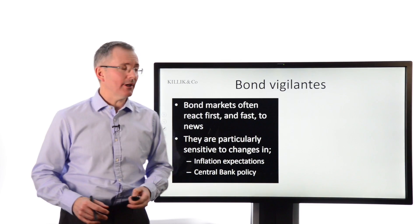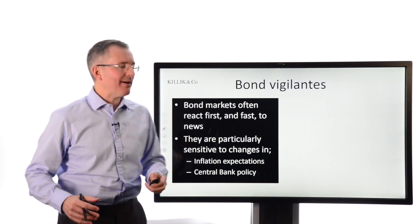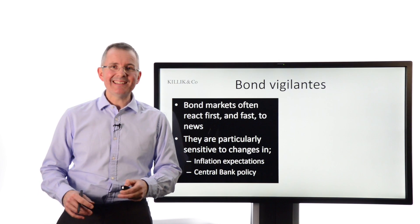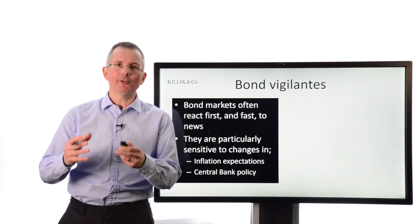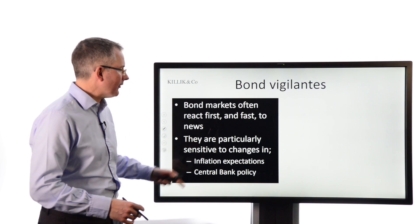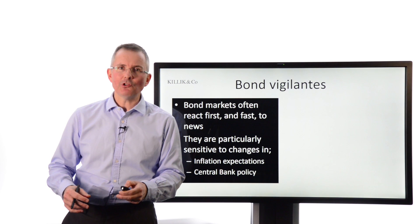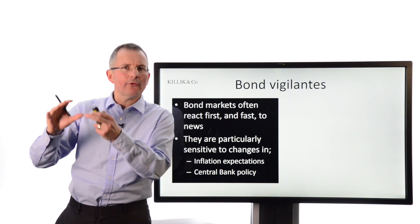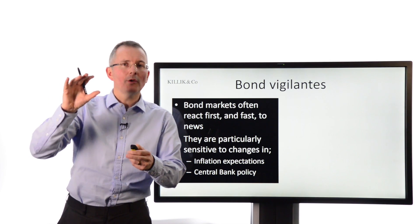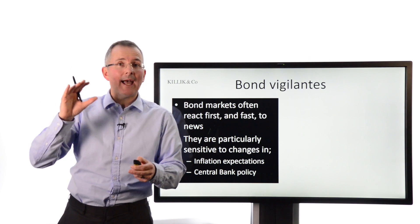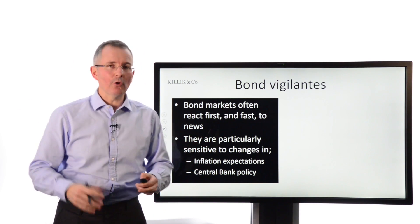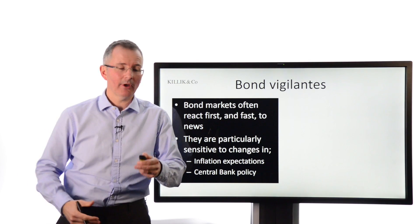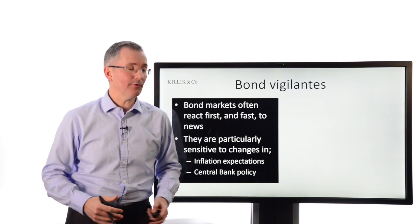Bond Vigilantes is the title of this slide. Bond markets often react first and fast to news, and therefore they are particularly useful places to look for trouble. They are quite sensitive to inflation expectation changes and central bank policy. Some people see the bond markets — where lots of bright people are focused on bonds of different maturities — as the place to look for changing sentiment and things that might have a knock-on effect on the way equities behave too.